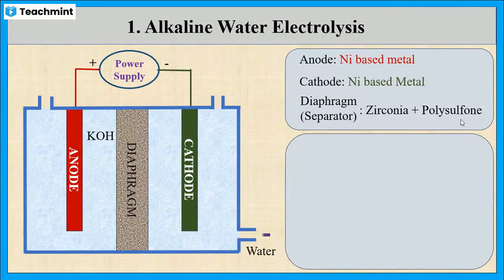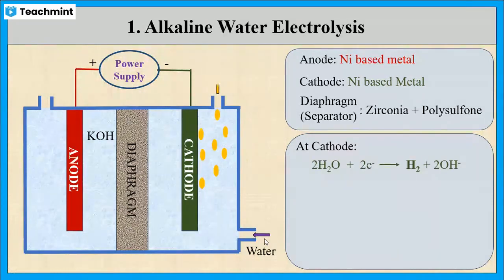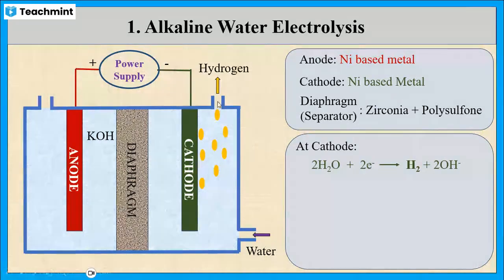Whenever water enters the cathode chamber, it will get absorbed on the cathode by the application of electrical energy, followed by the dissociation of hydrogen, that is hydrogen gas or hydrogen fuel.